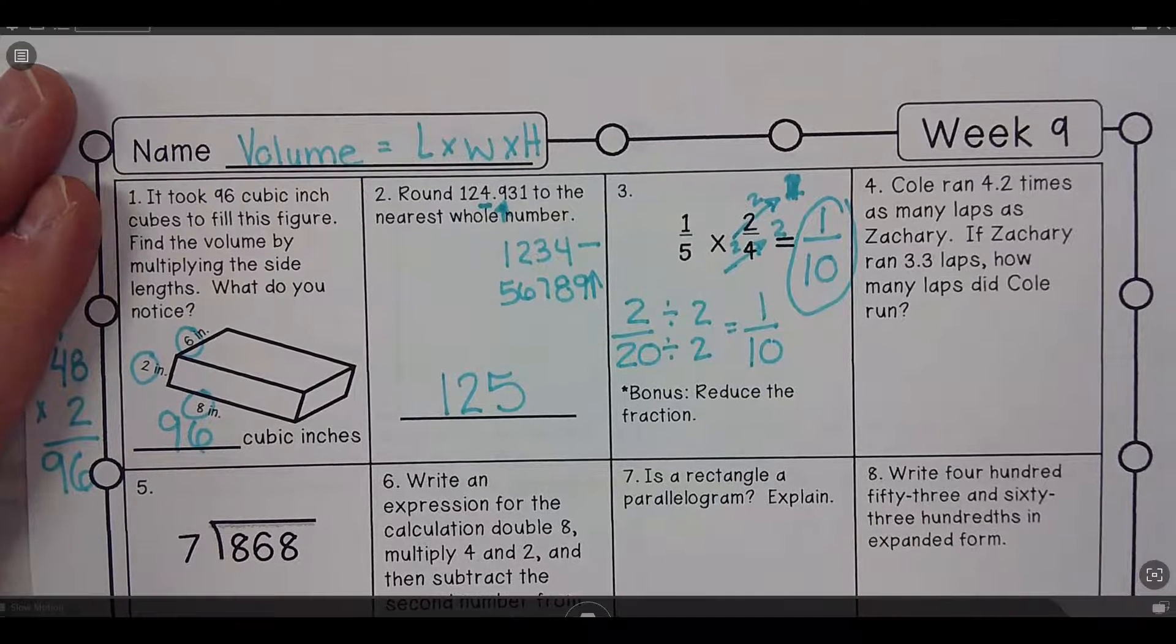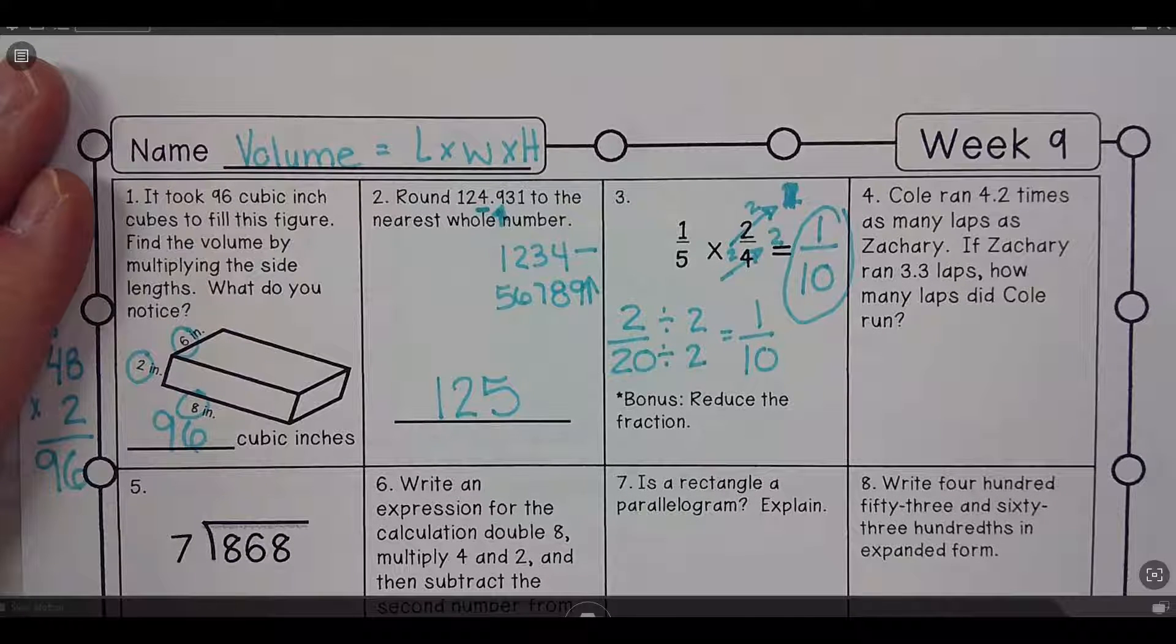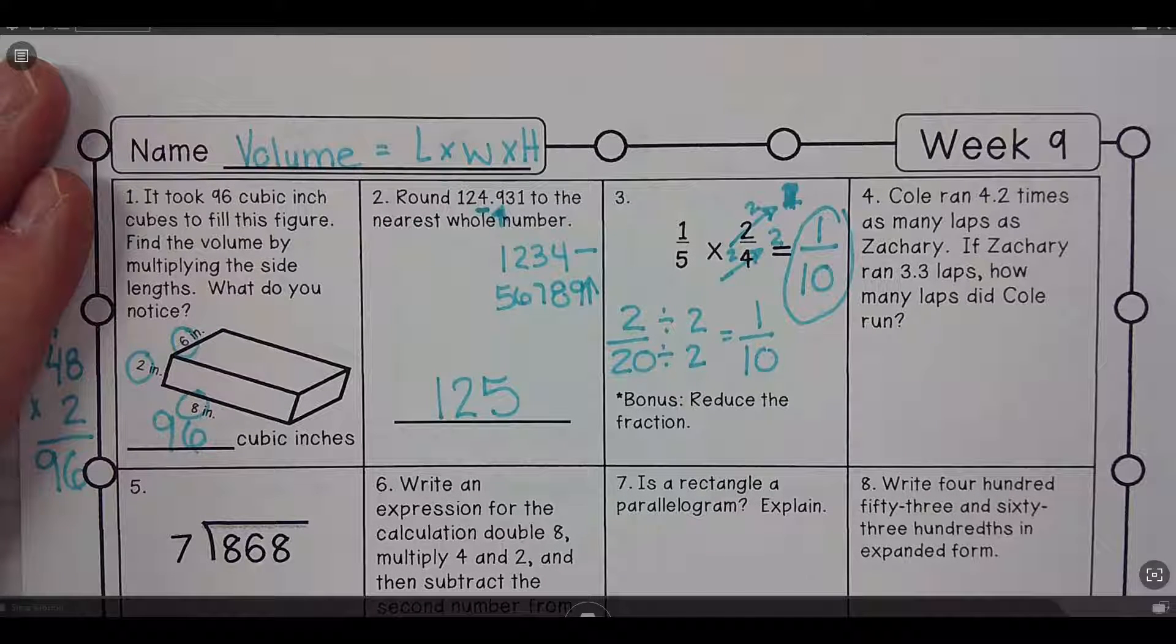Number 4: Cole ran 4.2 times as many laps as Zachary. If Zachary ran 3.3 laps, how many laps did Cole run?